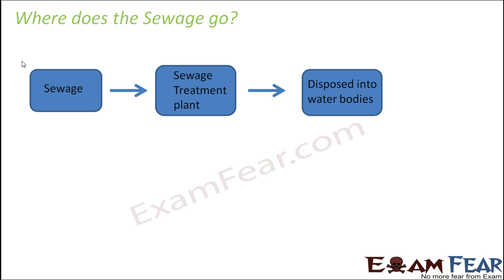The sewage containing all these undesirable things is passed to the sewage treatment plant, where pollutants and undesirable substances are removed to a very large extent. The treated water is then disposed into water bodies. Without treatment, wastewater flows through pipelines from our homes through community drains into a river, polluting and contaminating the river water.